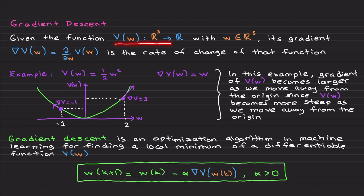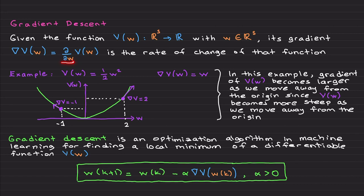Let's say we have a function. I am going to use the notation from the previous videos: V that depends on w. Let's say w is an s-by-one vector, so we define this function from Rˢ to R — this is a scalar-valued function. The gradient of this function is basically the partial derivative of V with respect to w, and it represents the rate of change of that function.